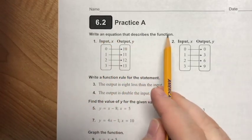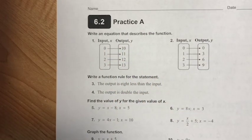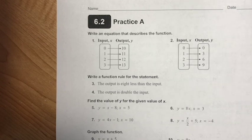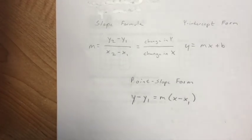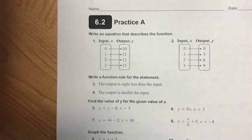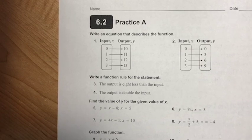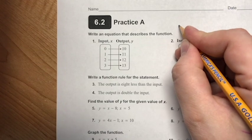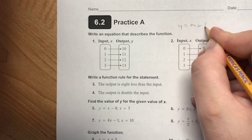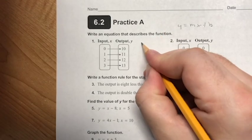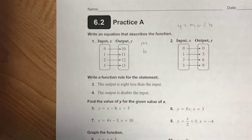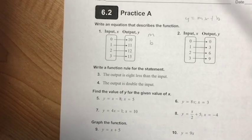It says: write an equation that describes the function, and here I have a mapping diagram. My job is to write an equation. There are many ways of figuring out the answer using this information, and I'm not going to show every possible way. So let's go through it — it's asking me to write an equation in the form y equals mx plus b. The things I need to know are: what is my slope, and what is my y-intercept?